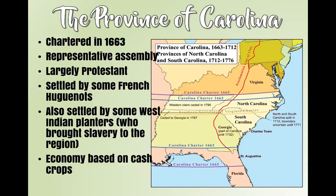North Carolina has a lot more smaller farms, and a lot of people are going to come from Virginia to North Carolina to grow tobacco there. South Carolina has much larger plantations — huge plantations, very similar to the Caribbean. If you've ever been to South Carolina, it looks very beautiful.